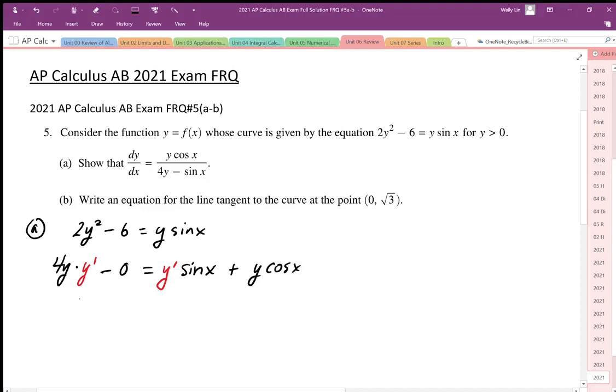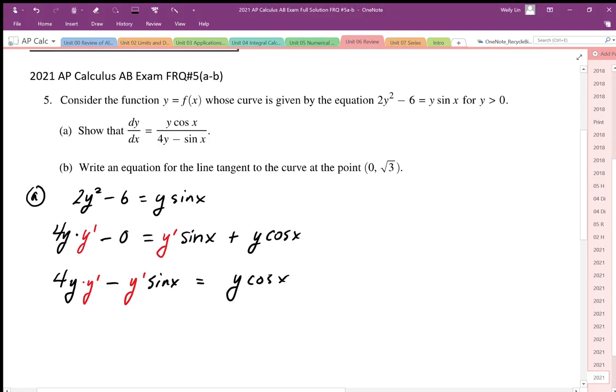So then I'm just going to group my y prime terms so I'm going to bring, I have here 4y times y prime, so it's going to be minus y prime sine x and that's equal to y cosine x.